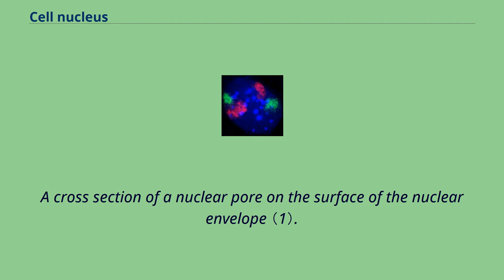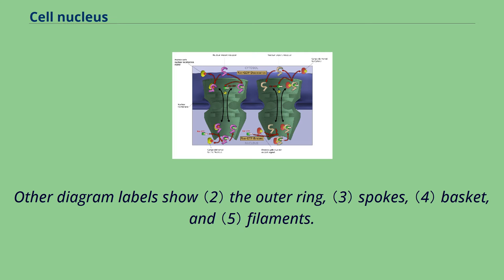A cross-section of a nuclear pore on the surface of the nuclear envelope. Diagram labels show the outer ring, spokes, basket, and filaments.